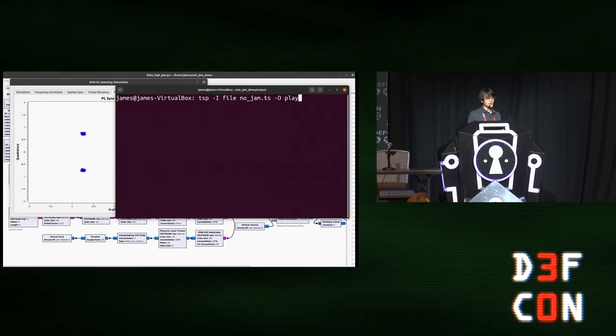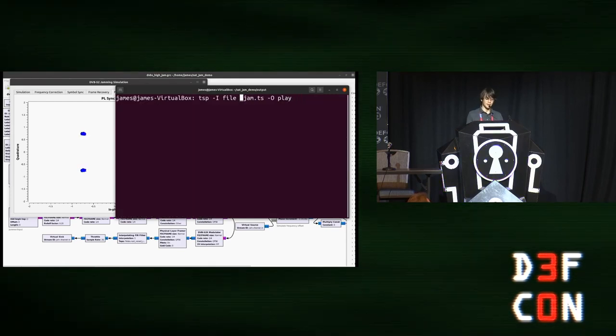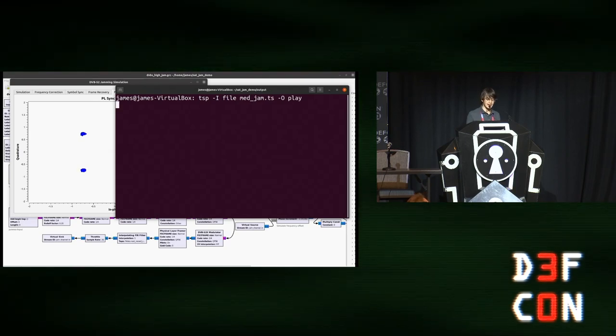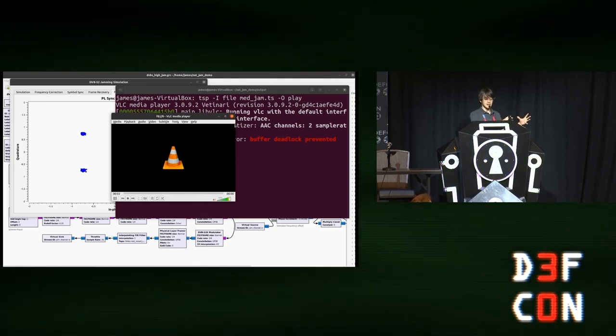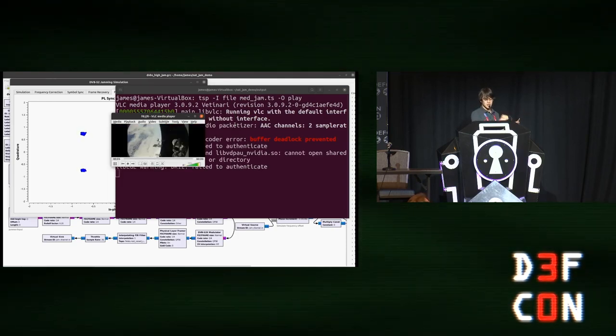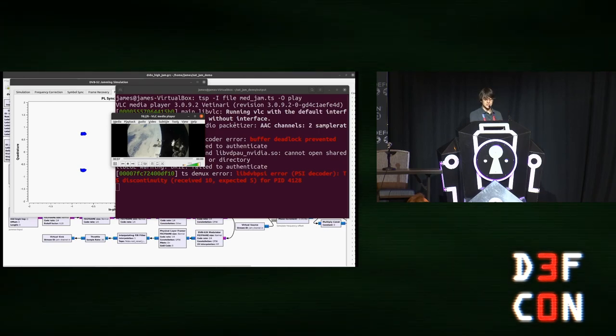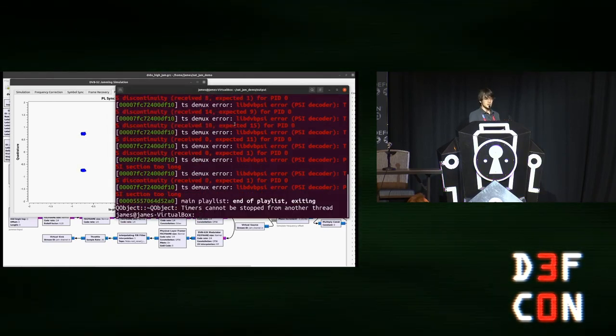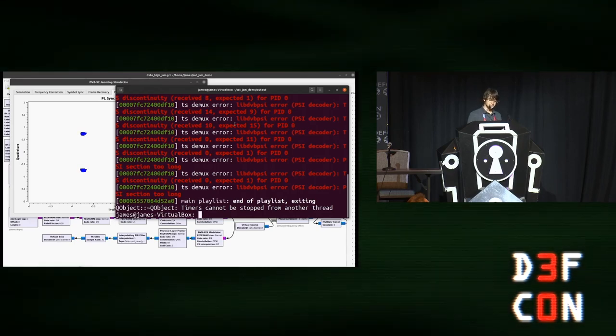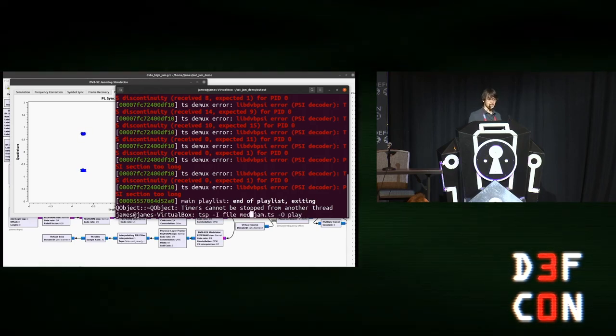Going through that whole simulated radio pipeline and coming out like this. The next scenario we're going to look at is where the jammer has equal power to the transmitter. So I'm going to go ahead and run that now. And what we'll see is before we turn on the jammer, we'll actually get a little bit of our legitimate video. And then once the jammer comes on, we'll start to see a bunch of error messages as it's no longer able to decode that video feed and eventually gives up. So this is where we've canceled the signal.